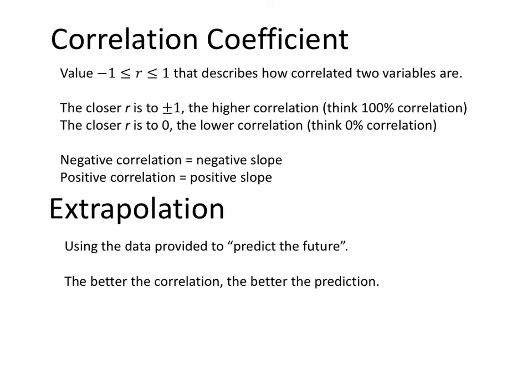What tells us how correlated two variables are is the correlation coefficient. We can't prove causation, but we can prove correlation. We denote it with r, and it ranges from negative 1 to 1. The closer it is to either positive or negative 1, the higher the correlation - think 100% correlation. If it's 0.8, that's like 80% correlation.